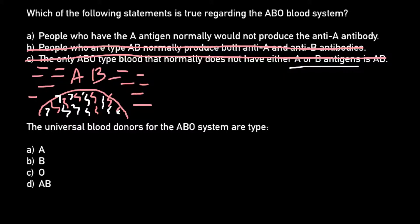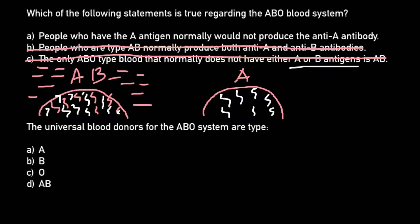Otherwise, those antibodies would destroy its own red blood cells. So the only correct answer here would be answer A: people who have the A antigen normally would not produce anti-A antibody. If it is a red blood cell of blood group A, on the surface of this red blood cell we would find only one type of antigen — antigen A.